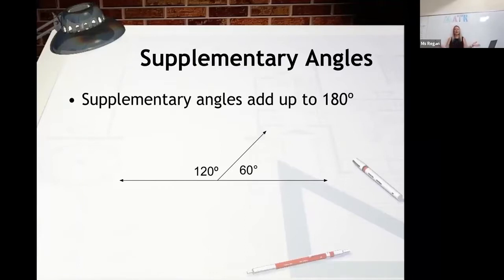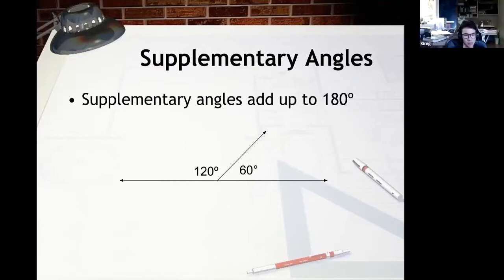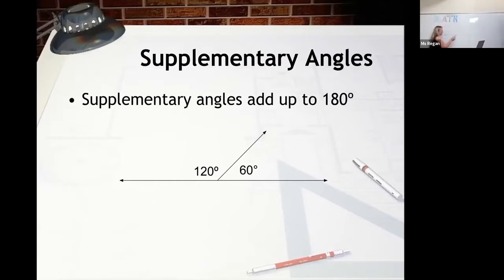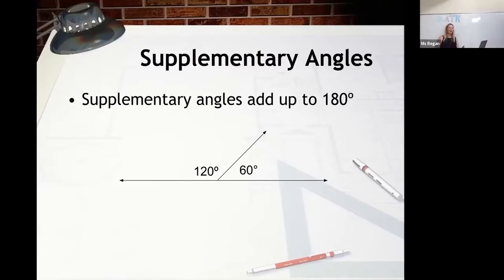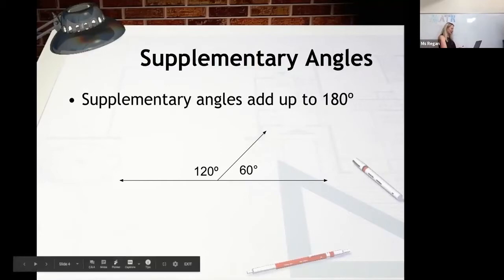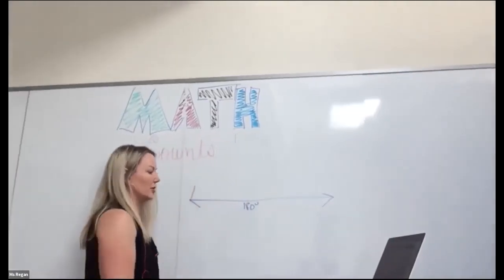Can anyone at home tell me what another word is for a 180-degree angle? 'A line.' Thank you, so a line is 180 degrees. In order to have a supplementary angle, those two angles add up to 180 degrees. On our sample here we have a 60-degree angle and a 120-degree angle — however, it doesn't matter how big those angles are.